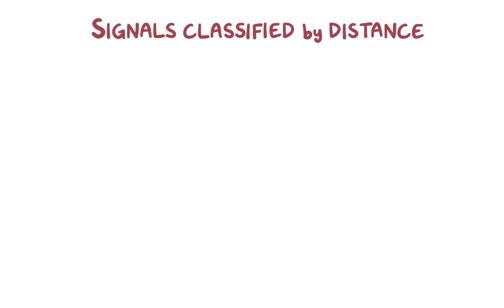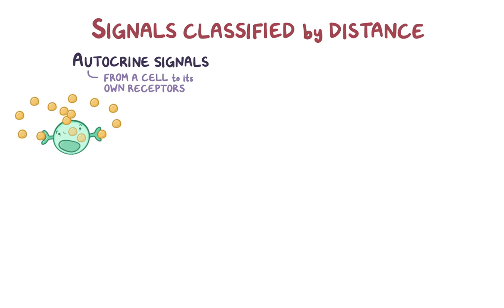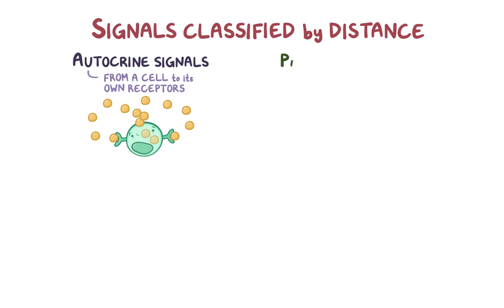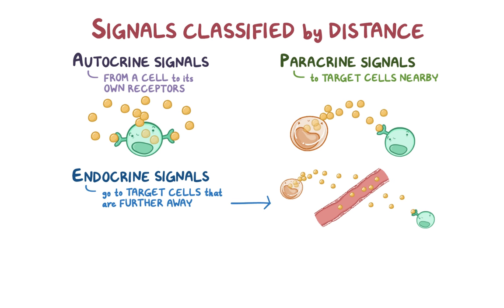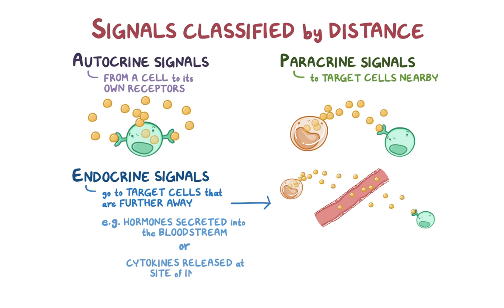Signals can be classified according to the distance between the signaling cell and the target cell. Autocrine signals are produced by a cell and go to its own receptors, so the cell sends a signal to itself. Paracrine signals go to nearby target cells, and endocrine signals go to target cells that are further away — examples include hormones secreted into the bloodstream, as well as cytokines released at the site of injury that act on the brain to cause a fever.